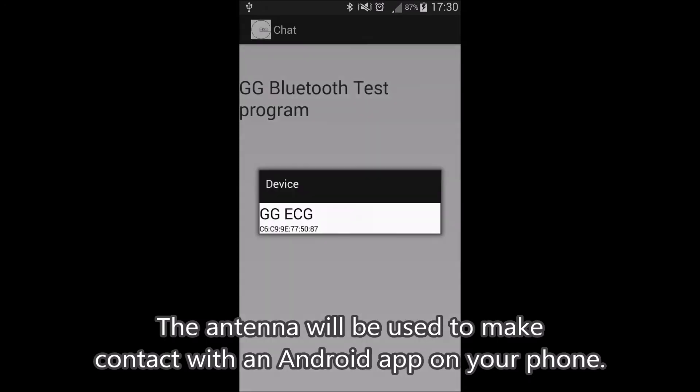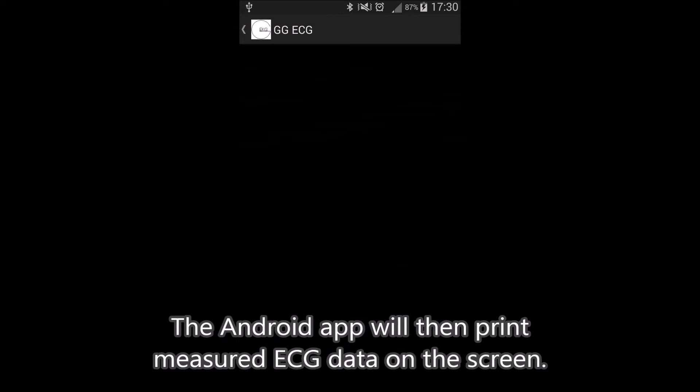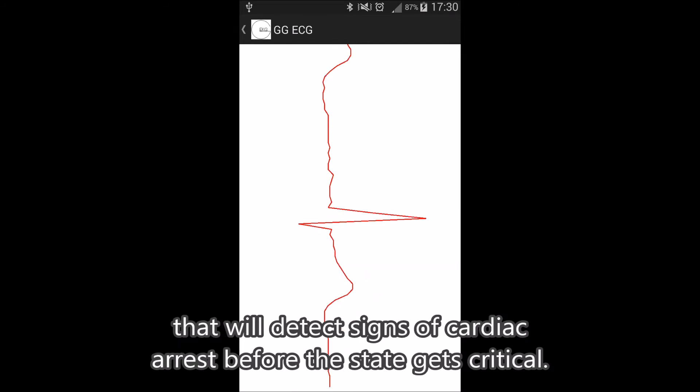The antenna will be used to make contact with an Android app on your phone. The Android app will then print measured ECG data on the screen. From here on out, it is but a small step to include algorithms that will detect signs of cardiac arrest before the state gets critical.